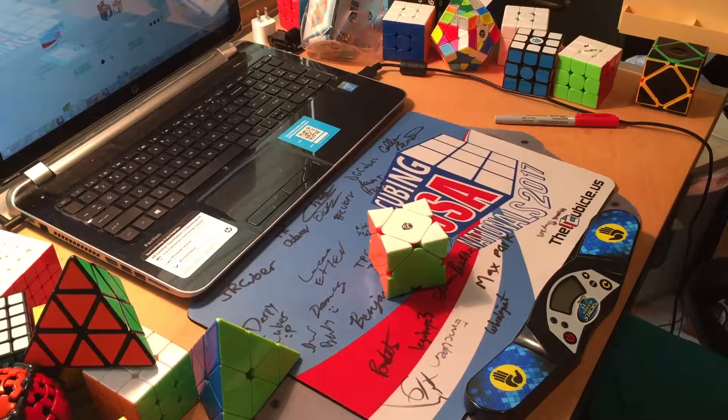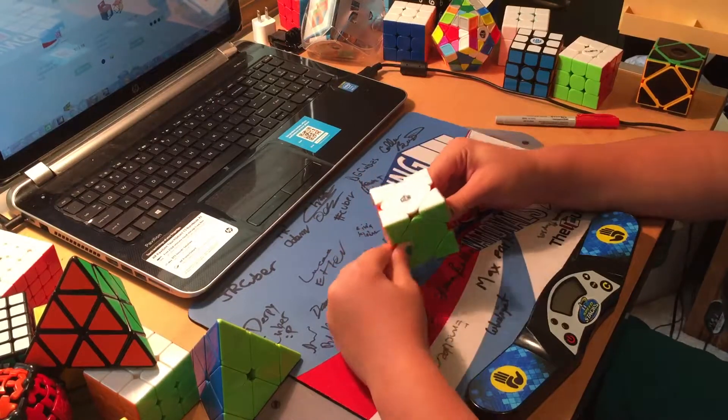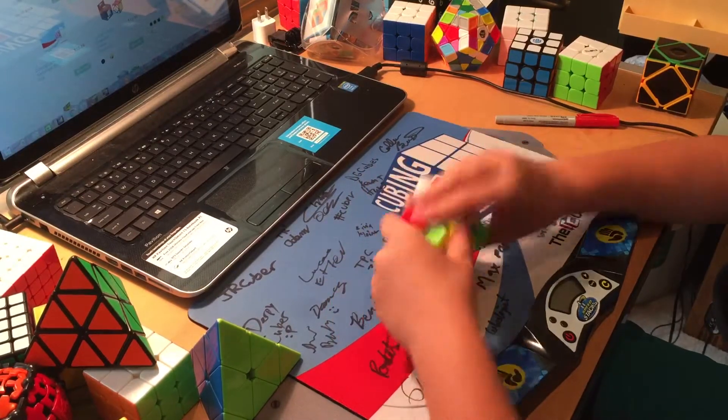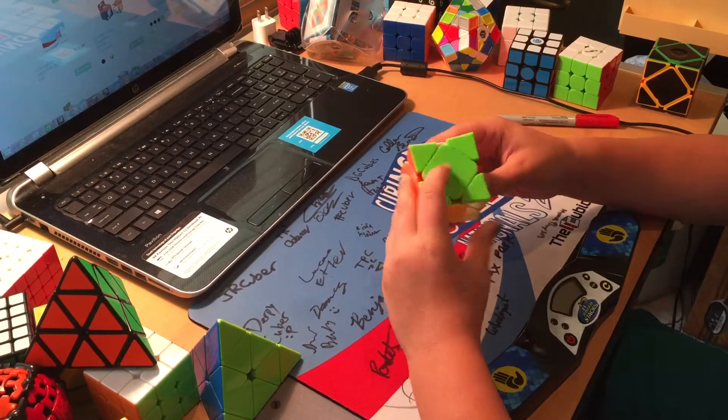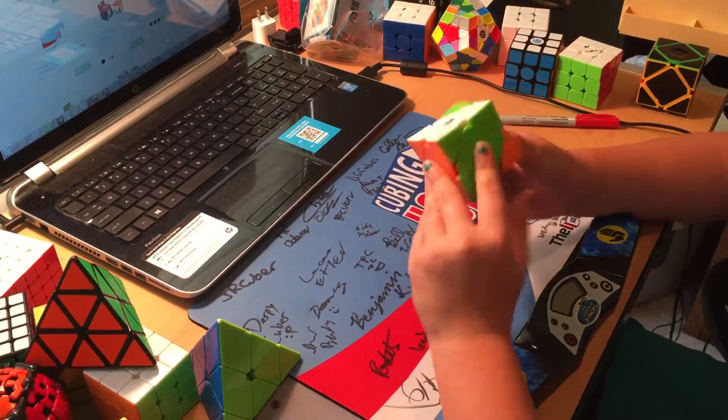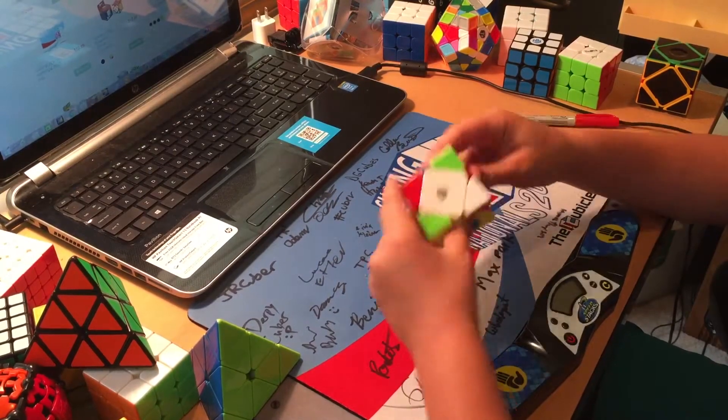Hello everybody, it's FangCube here and today I'm going to be reviewing the X-Man Wingy Concave Skewb. This skewb comes in around $14 on TheCubicle.us. It comes in black, white, and stickerless. I got the stickerless one here.